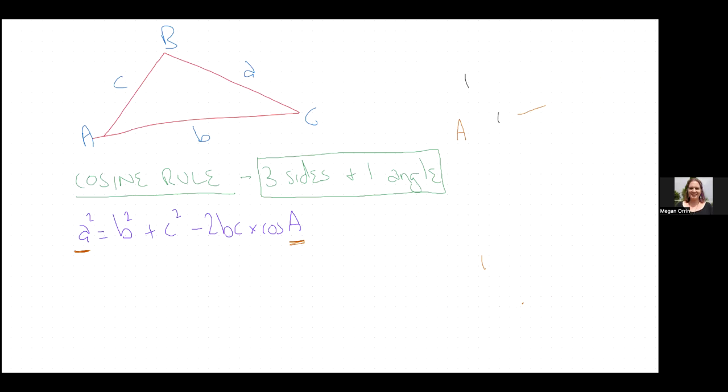All right, let's do it again but this time let's do it with an unknown angle. So I'm going to give you the other version of it: cosine of A equals b² plus c² minus a² over 2bc. So this is the other version of the formula. You use this one if you want a side. This one is if you want to find an angle.